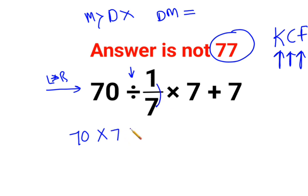So this becomes 70 multiplied by 7, which is 490, multiplied by 7 plus 7. Next, we do the multiplication.